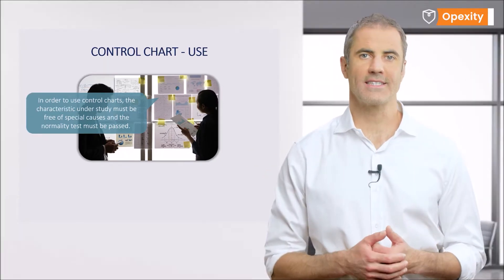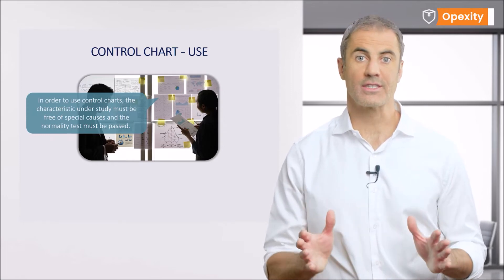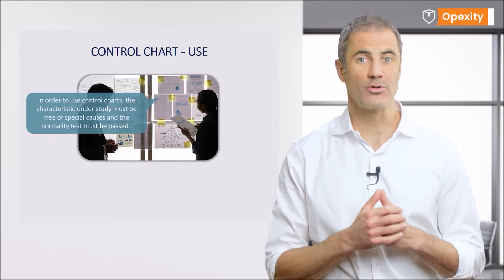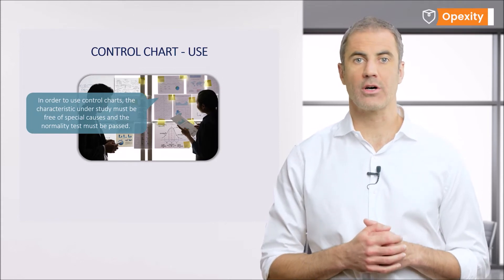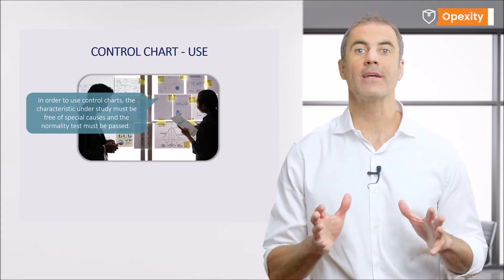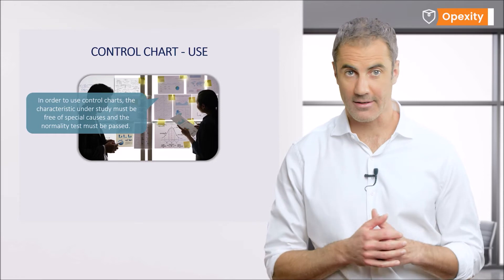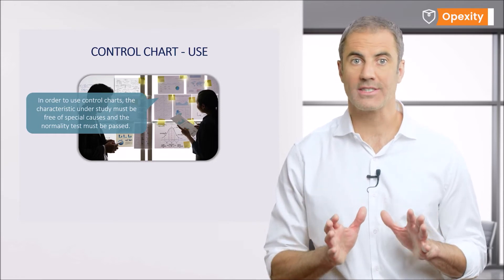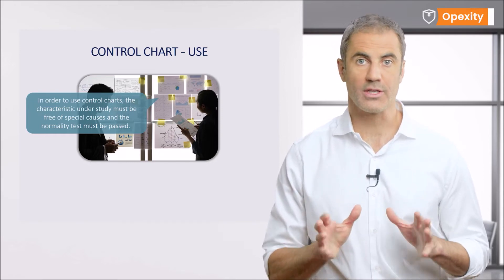A normality test is carried out to assure that the statistic under study is indeed a normal distribution. Obtaining this result makes us sure that we may control the process statistically, so both control charts and other SPC tools are applicable.